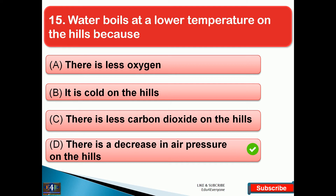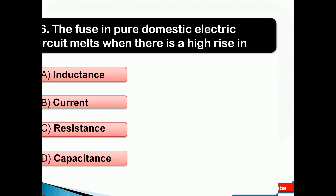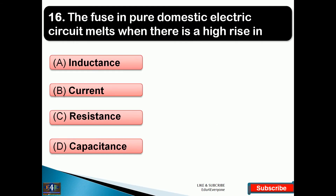Water boils at a lower temperature on the hills because — the right answer is option D — there is a decrease in air pressure on the hills. Now let's look at some questions on chemistry. First question: the fuse in a domestic electric circuit melts when there is a high rise in — the right answer is option B, that is current.